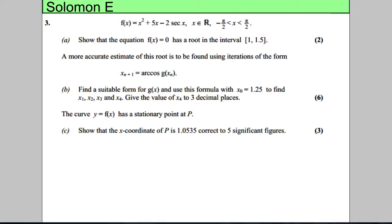In this question we're given a function of x. Our function of x is x squared add 5x subtract 2 sec x. x is a real number and x must be between negative pi by 2 and pi by 2. Show that the equation f of x is 0 has a root in the interval 1 to 1.5.